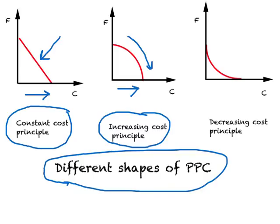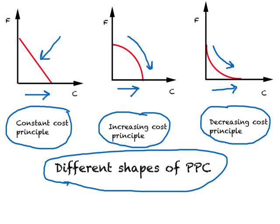The third shape is convex to the origin. Going down the curve, the absolute value of the slope of the PPC decreases — or the Opportunity Cost of Clothing in absolute terms is decreasing. This means as you produce more and more clothing, you are willing to give up less and less food. Remember these different shapes and what they mean, because we'll use each to study International Trade Theory. Also try to think of real-world examples of Constant, Increasing, or Decreasing Cost Principles.